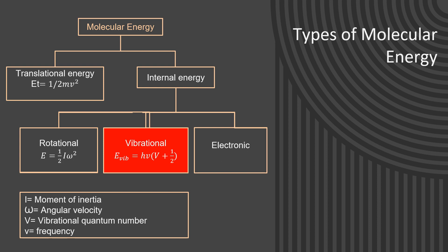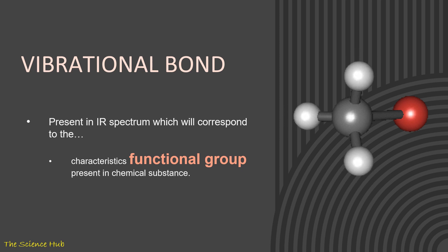There are various types of molecular energy, but in IR spectroscopy, vibrational energy plays an important role to identify the structure of molecules. Here you can observe vibrational bonds—bonds are vibrated with particular frequencies present in the IR spectrum which correspond to the characteristic functional group present in the chemical substance. When we apply a particular wavelength or particular IR range to the substance or molecule, it will frequently vibrate.